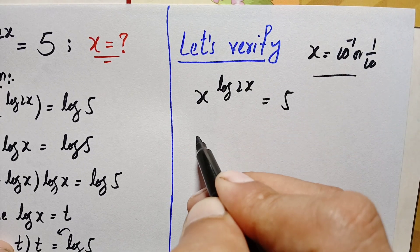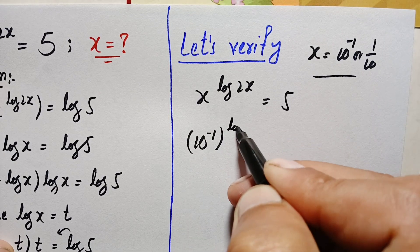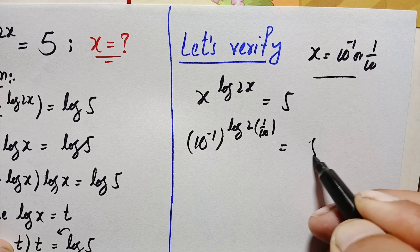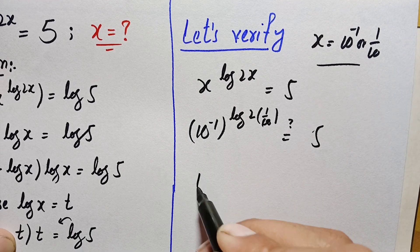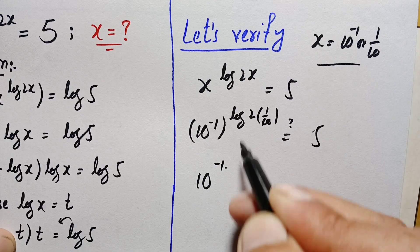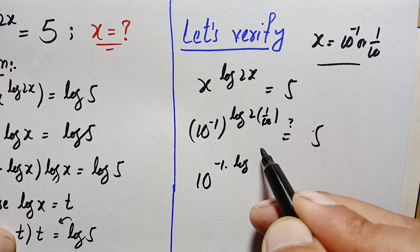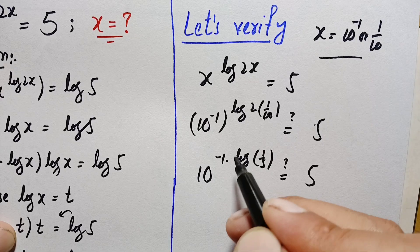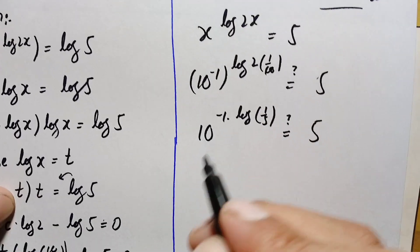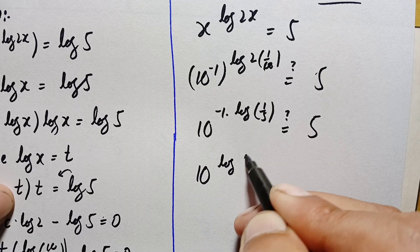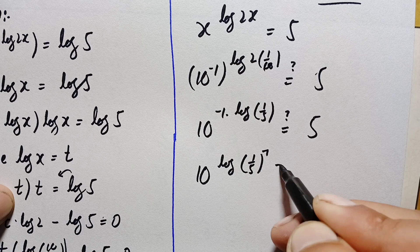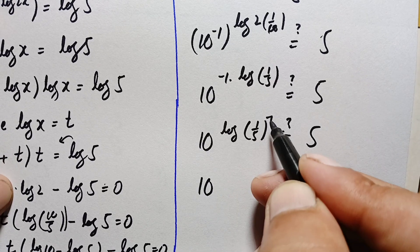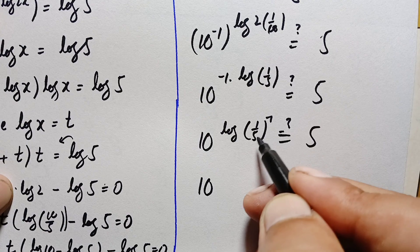Substituting x = 1/10: we get (10^(−1)) raised to power log(2 × 1/10) equals 5. This becomes 10 raised to power −1 times log(2/10), which simplifies to log(1/5). Moving the −1 to the power inside the log gives 10 raised to power log(1/5)^(−1).